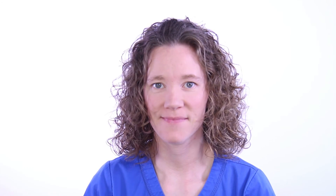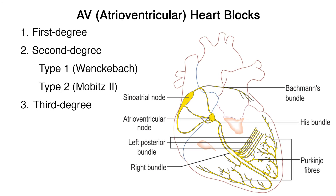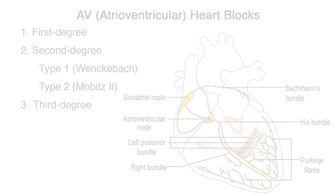A heart block is an abnormal heart rhythm known as an arrhythmia and can occur anywhere in the specialized conduction system of the heart. The electrical signals telling the heart to contract are partially or totally blocked between the atria and ventricles — therefore it is called an atrioventricular or AV block. The AV blocks are identified by their severity: first degree, second degree (which can be subdivided into type 1, Wenckebach, and type 2, Mobitz 2), and then third degree heart block.